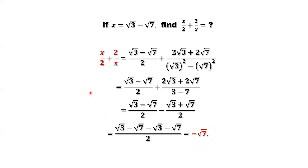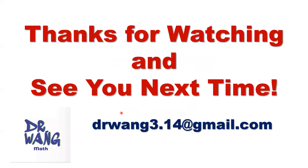For this problem, nothing special — just the general idea of how to solve this kind of problem. If you have a square root sign in the denominator, the basic idea is to multiply the conjugate of the denominator on both numerator and denominator to get rid of the root signs from the denominator. Then it becomes easy to simplify and get the answer. That's all — thanks for watching and see you next time.